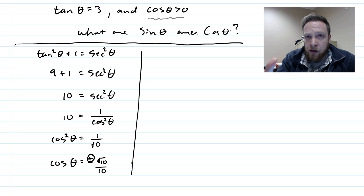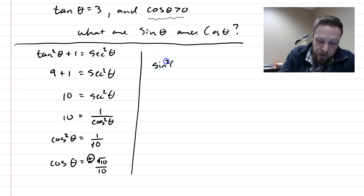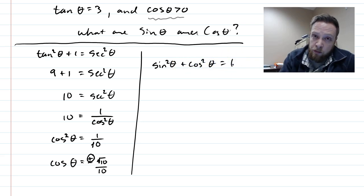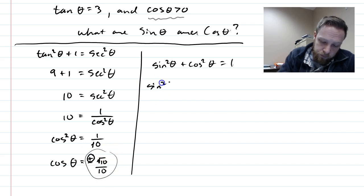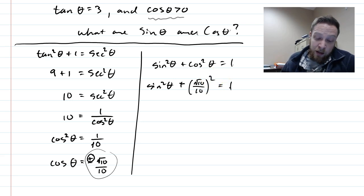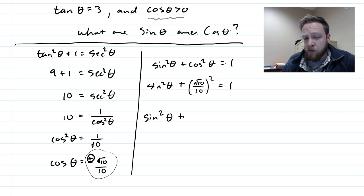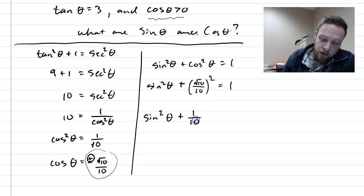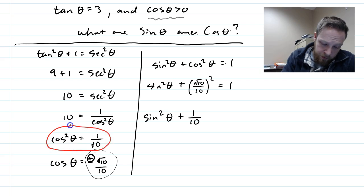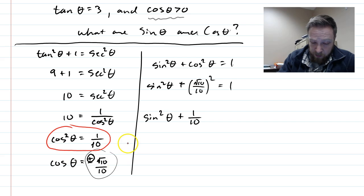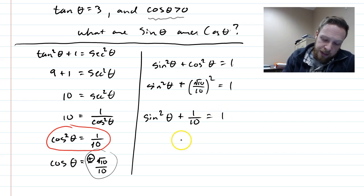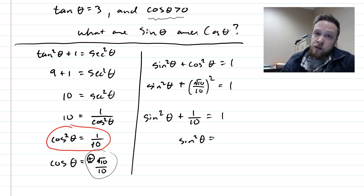Now I need to find sine. There's a Pythagorean identity involving sine and cosine: sine squared theta plus cosine squared theta equals one. I'll plug in cosine theta. Cosine squared theta is just one-tenth, so sine squared theta plus one-tenth equals one. Subtracting one-tenth from both sides gives sine squared theta equals nine-tenths.